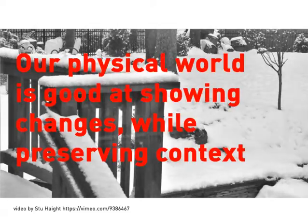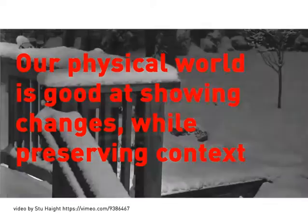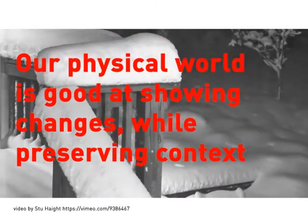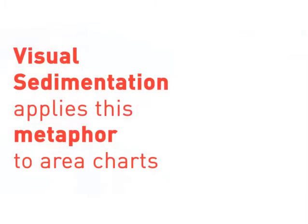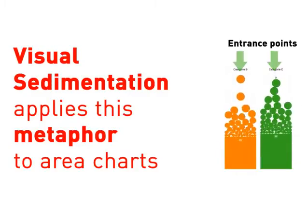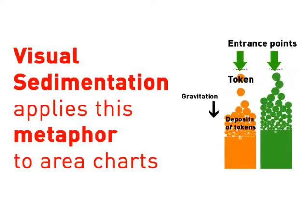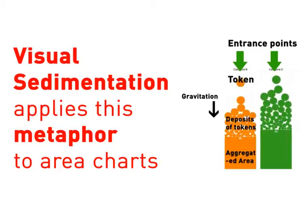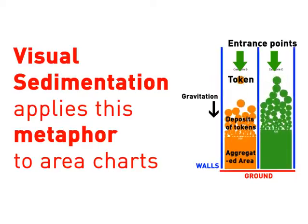Our physical world is good at showing changes while preserving context. Visual sedimentation applies this metaphor to area charts. Incoming data tokens arrive at an entry point, fall down into a deposit area, then transform into an aggregated area, which is constrained by walls and the ground.